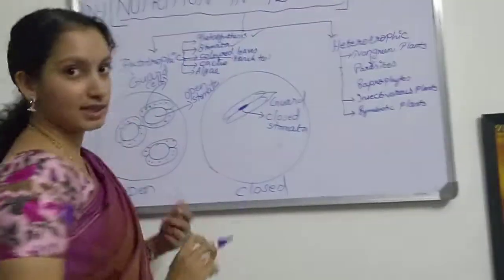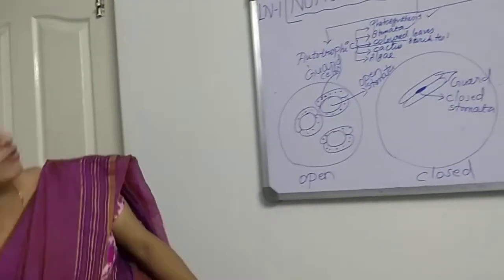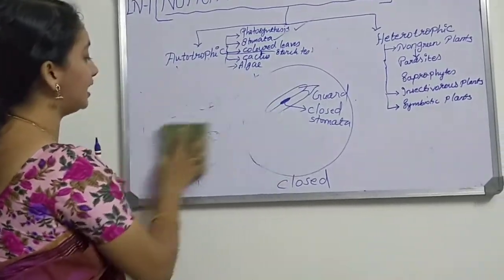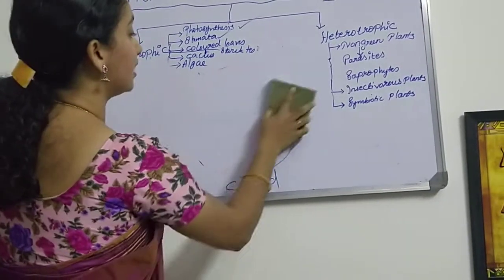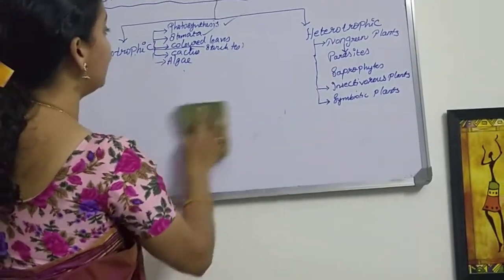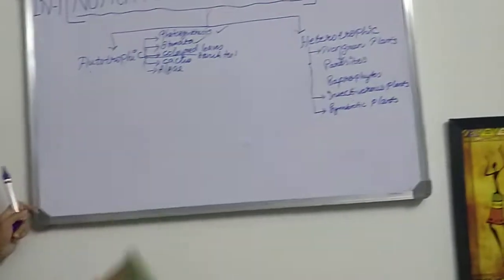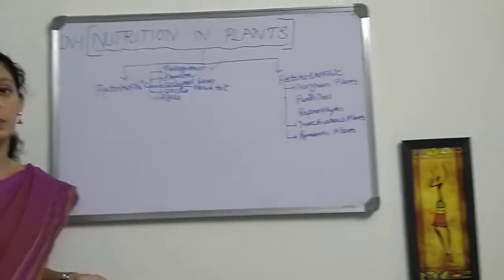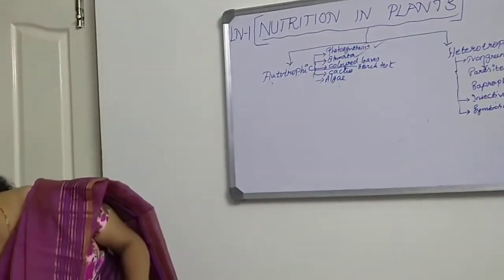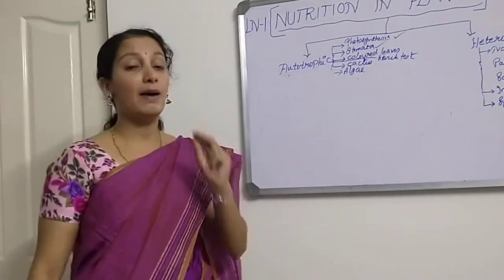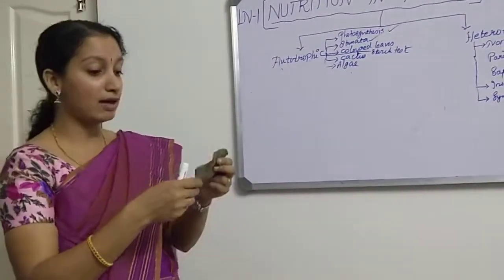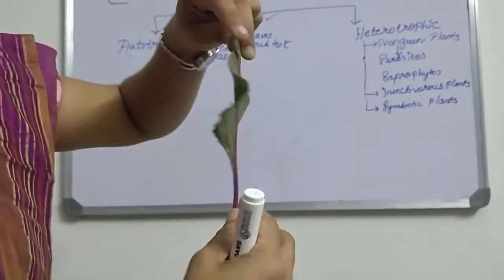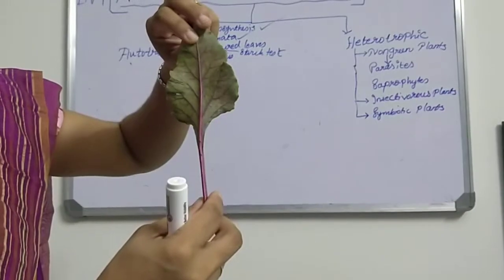Photosynthesis is done, stomata is done, moving to the next one: Colored Leaves. Normally we see all leaves in green color because they contain the green color pigment chlorophyll. We know about this green color pigment, but there are other color pigments too. Because the leaves look green in color, we don't know much about the other pigments. But some leaves appear in different colors — I have a beetroot leaf here; you can see some red color mixed with green.